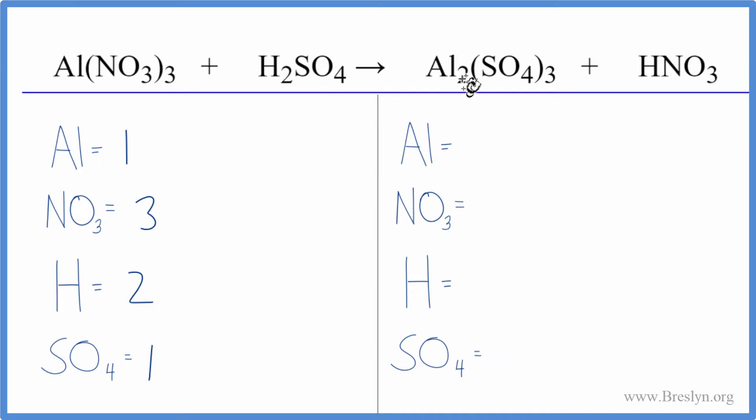On the product side we have two aluminums, one nitrate, one hydrogen, and then the one sulfate times three - we have three of those. So that makes it a lot easier - we don't have all these oxygens everywhere. Let's try to balance it.